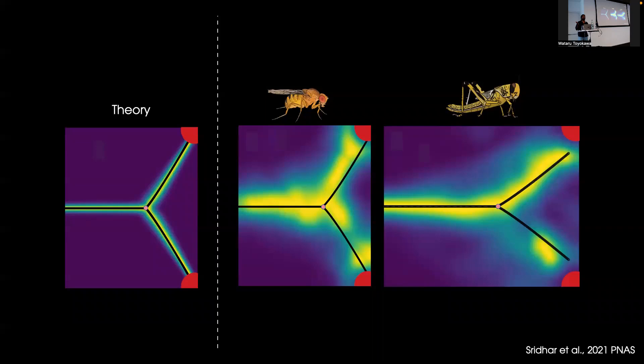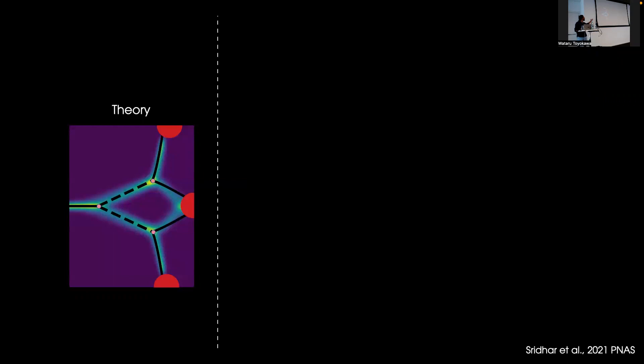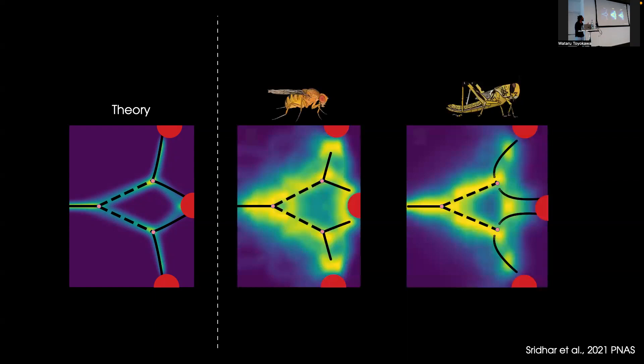But what about more than two options? A lot of models in the decision-making literature focus on binary decisions. But an animal in the wild may have many more spatially distributed options to choose from. Our model is able to make predictions for arbitrary number of options. For three options, the animal will move in the average of all three options until the outermost targets exceed a critical angular threshold, at which point it will eliminate one option and start moving between the remaining two. Then it will do a second round of elimination and go to the remaining option. It's reduced the complexity of the decision-making task, which is a three choice decision to two binary decisions. This is exactly what both flies and locusts do as well.